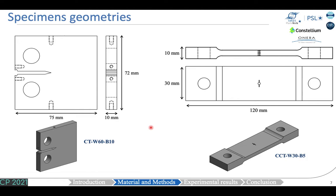Fatigue crack propagation tests were performed on compact tension (CT) and central crack tension (CCT) specimens. The CT specimen on the left has a thickness of 10 mm. The electric potential difference technique is used to monitor crack size propagation — two holes allow the electric current flow, and the potential difference is measured from holes on both sides of the notch. A slot is also introduced to measure crack mouth opening displacement with a clip-on extensometer. The CT specimen on the right has a thickness of 5 mm. The width of the CCT specimen is rather low compared to usual industry dimensions, but was chosen to enable sampling in the through-thickness direction.